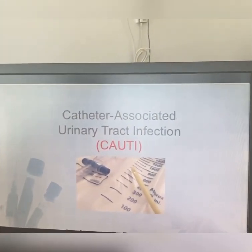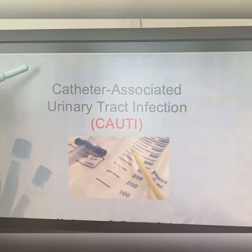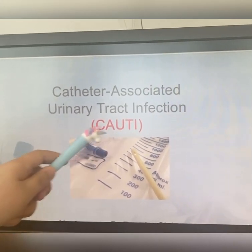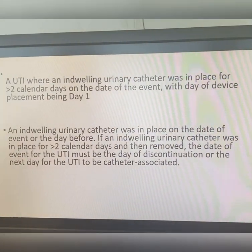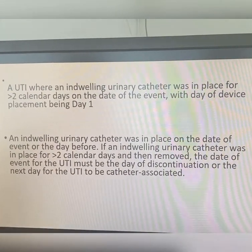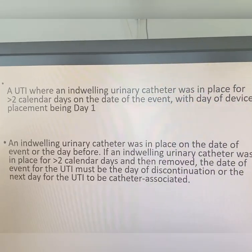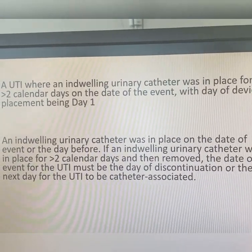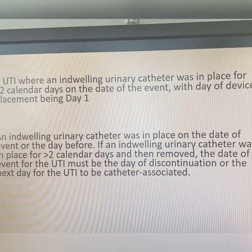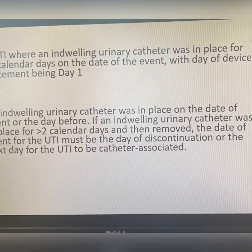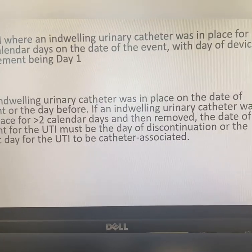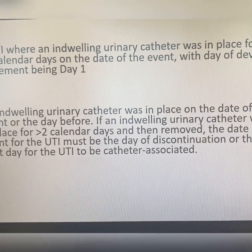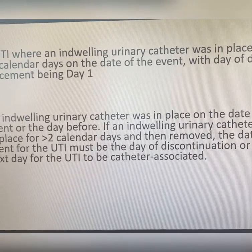The third device-related infection is Catheter Associated Urinary Tract Infection, or CAUTI. CAUTI is a UTI where an indwelling urinary catheter was in place for more than two calendar days on the date of event, with day of device placement being day one. An indwelling urinary catheter was in place on the date of event or the day before. If an indwelling urinary catheter was in place for more than two calendar days and then removed, the date of event for the UTI must be the day of discontinuation or the next day.